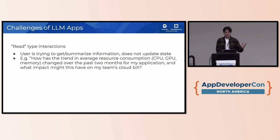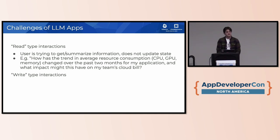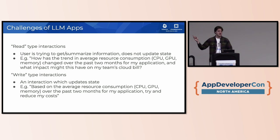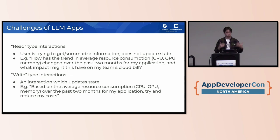For example, I might ask the model how the trend in average resource consumption has changed over the past few months and what impact that might have on my team's cloud bill. It retrieves and summarizes information but doesn't change anything. By contrast, write-type interactions update the state of the application or take an action — for example, saying 'based on average resource consumption, try and reduce my costs,' where the model might turn off a server or change the node type. These two types lead to very big differences in how we build applications around language models.